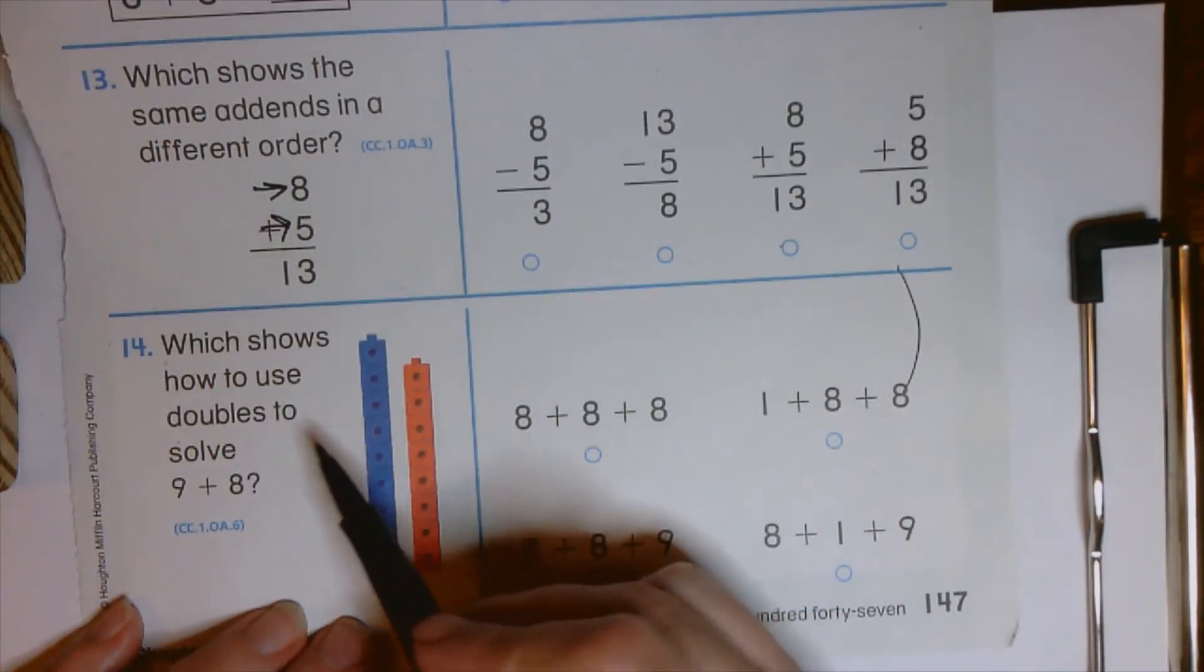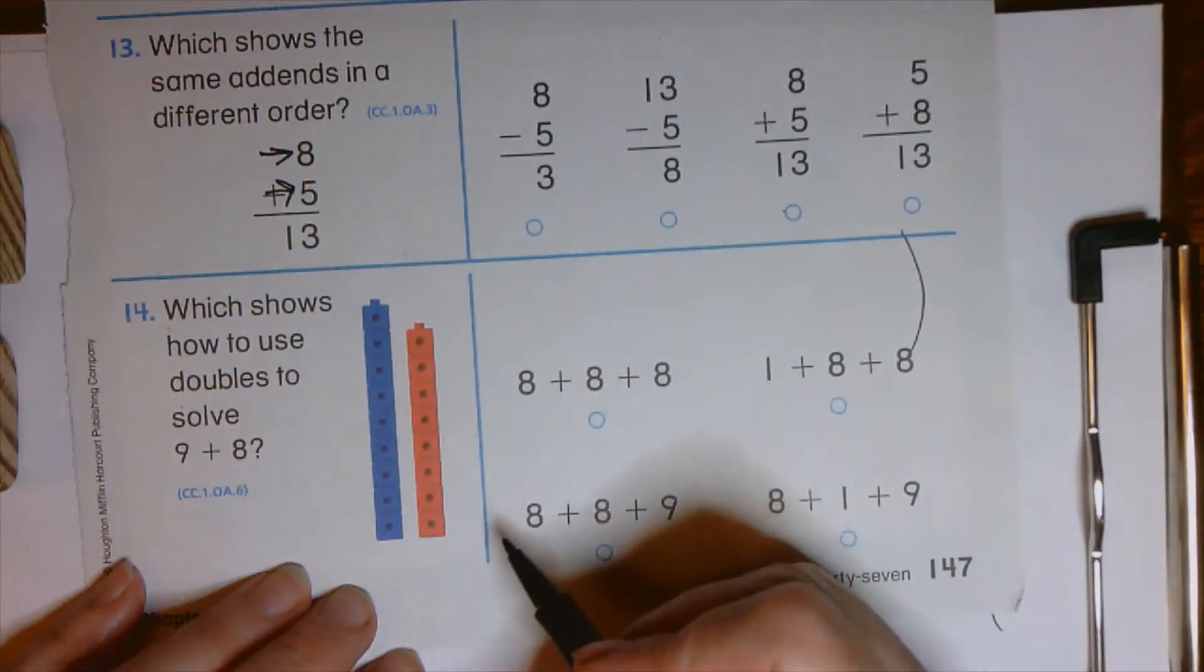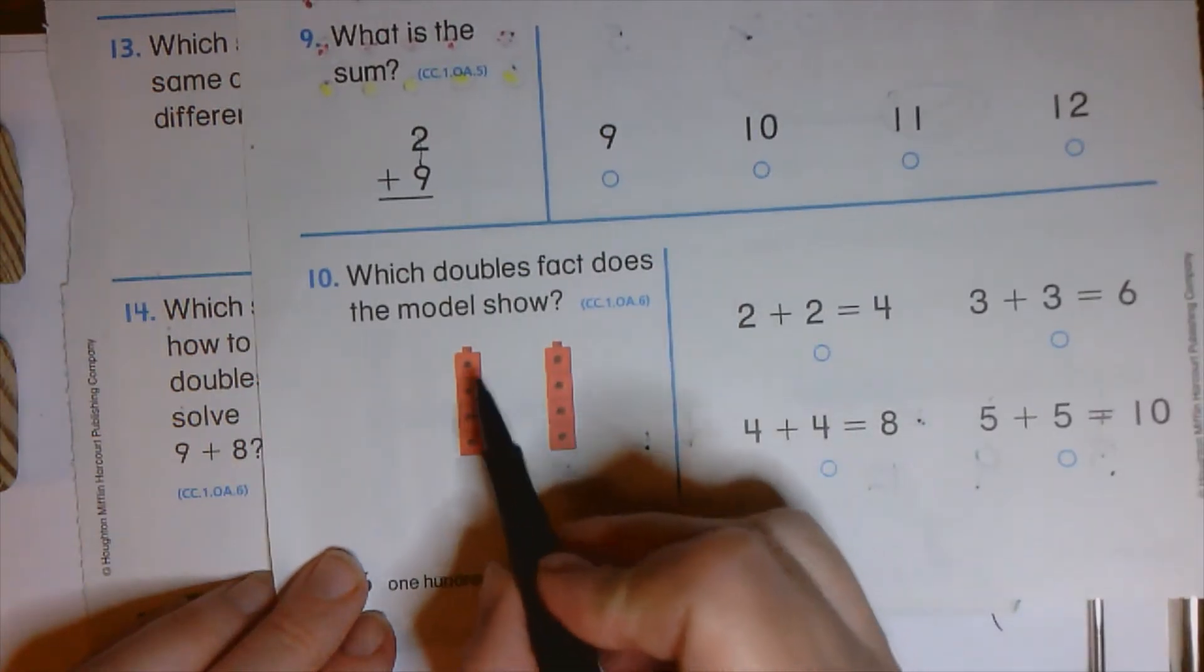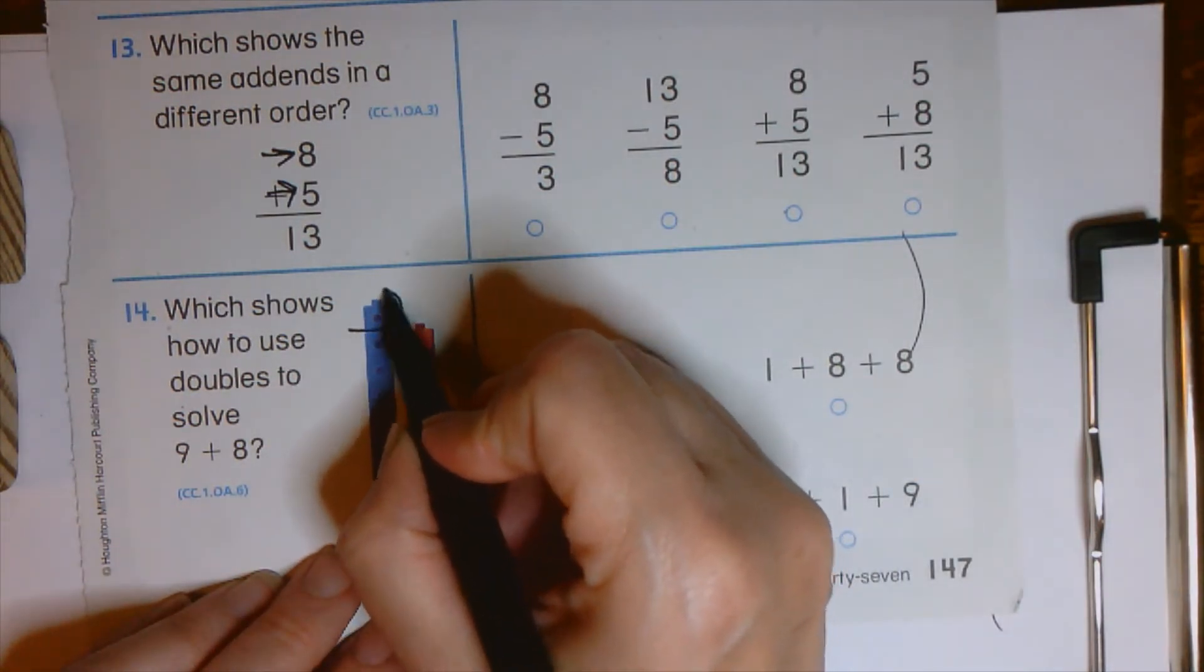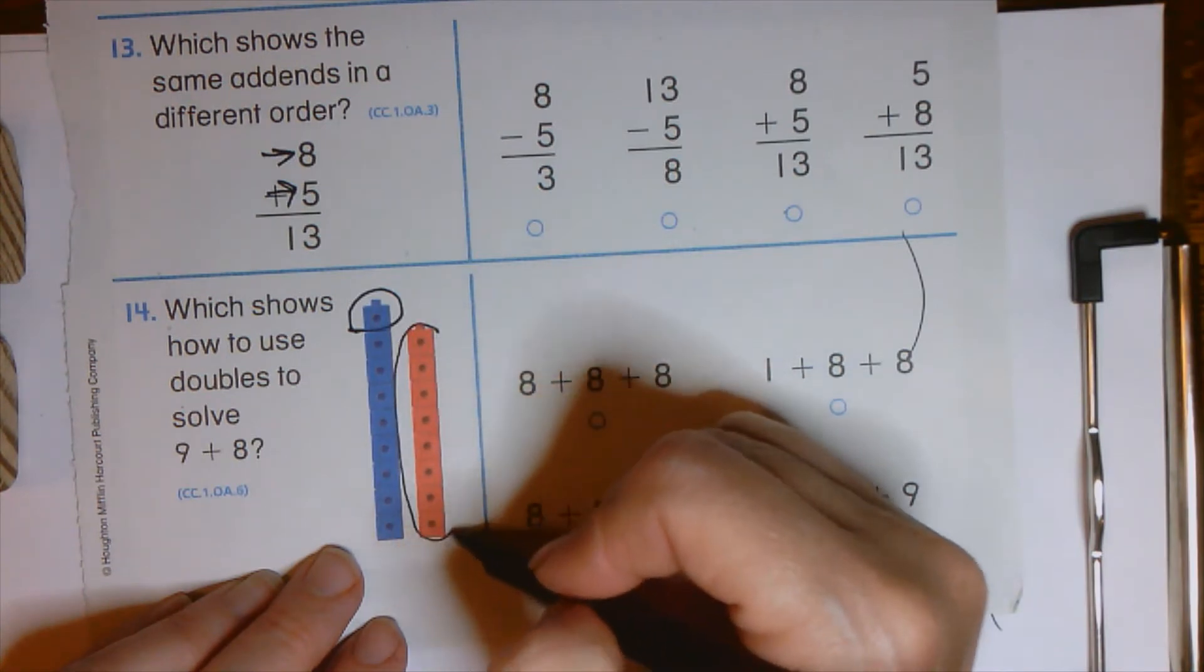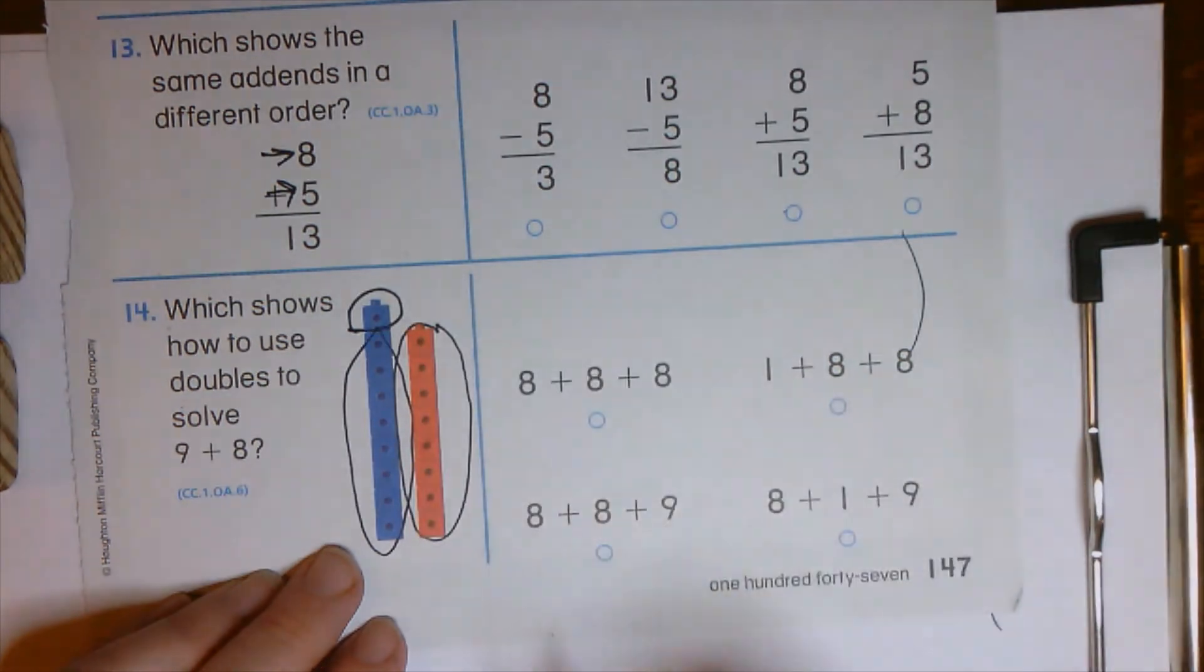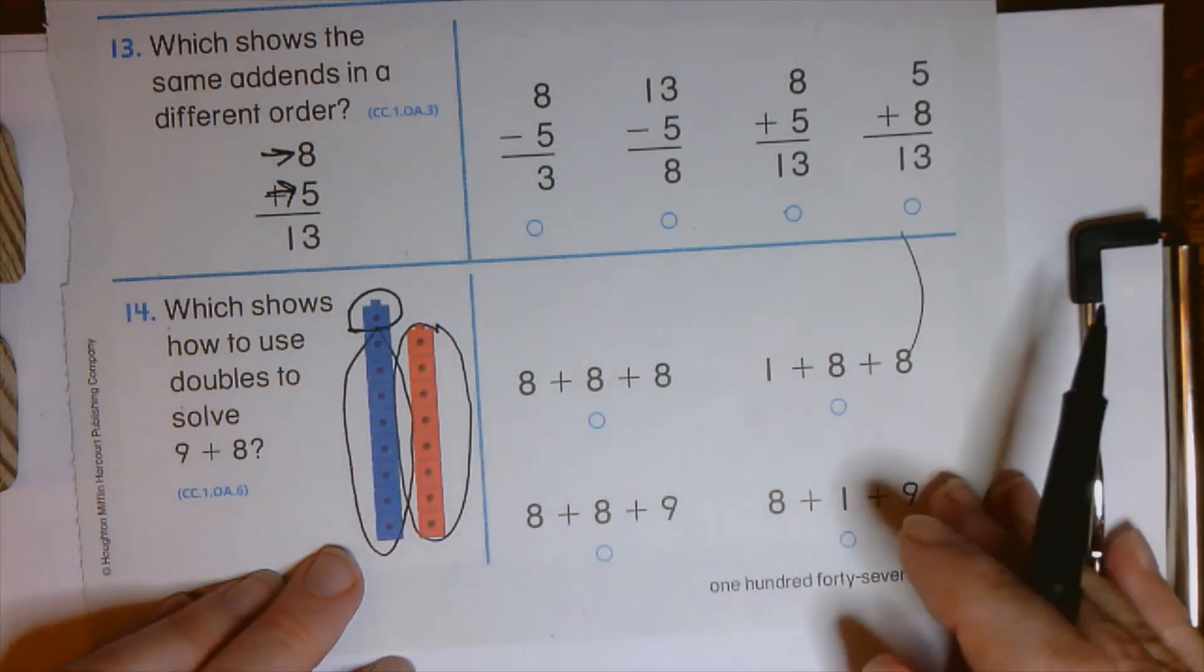And which shows how to use doubles to solve nine plus eight? So let's take a look here. You remember back on this page when we looked at the doubles fact? Do you see how they were the same height? So if we're looking at these being the same height, this one here is an extra one, isn't it? So we want to say how much is this plus how much is this plus that one there. And remember it could go in a different order. We might start with this one and then add those in.